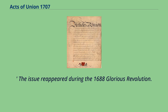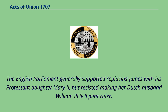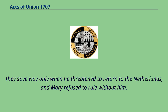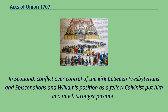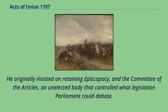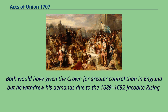The issue reappeared during the 1688 Glorious Revolution. The English Parliament generally supported replacing James with his Protestant daughter Mary II, but resisted making her Dutch husband William III joint ruler. They gave way only when he threatened to return to the Netherlands, and Mary refused to rule without him. In Scotland, conflict over control of the Kirk between Presbyterians and Episcopalians and William's position as a fellow Calvinist put him in a much stronger position. He originally insisted on retaining Episcopacy and the Committee of the Articles, an unelected body that controlled what legislation Parliament could debate, but he withdrew his demands due to the 1689–1692 Jacobite Rising.